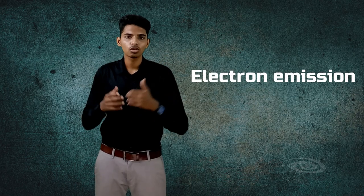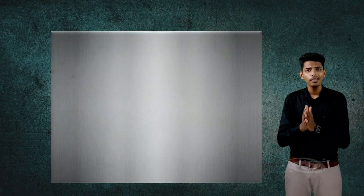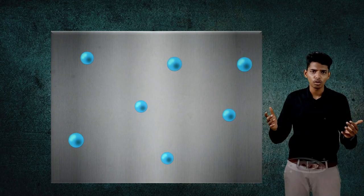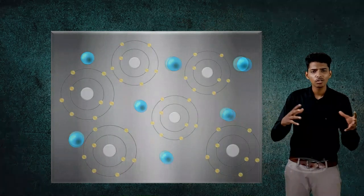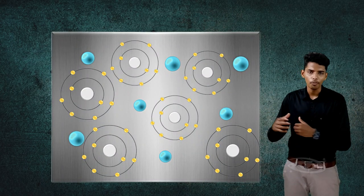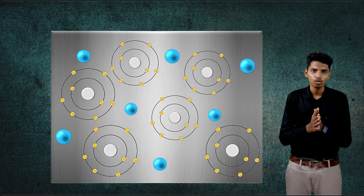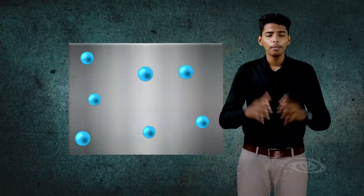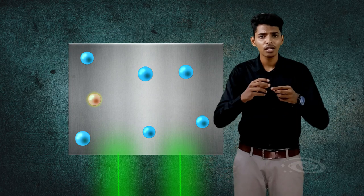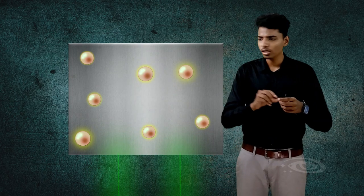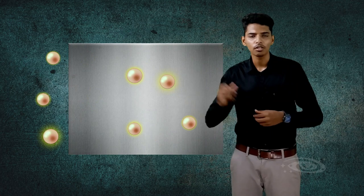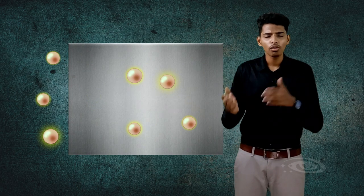Now we'll see what electron emission is. Normally in all metals we have free electrons — electrons that are not bound to any atom's orbit and are free to move inside the metal. When external energy is given to these free electrons, they gain energy and move out from the surface of the metal. This is called electron emission.